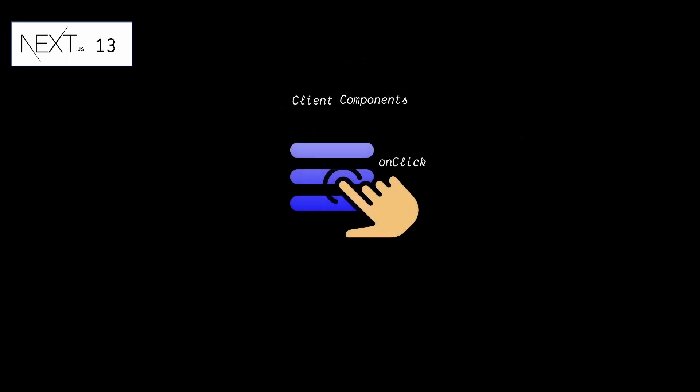This is because the initial HTML is rendered on the server and the client just adds interactivity. Client components enable you to add client-side interactivity. They are pre-rendered on the server and hydrated on the client.